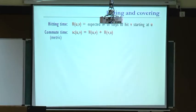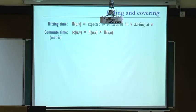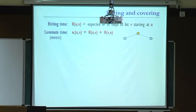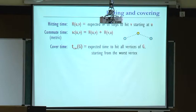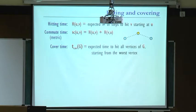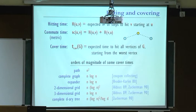H(u,v) is the expected number of steps to hit v starting from u. It turns out to be useful to symmetrize this quantity: K(u,v) is the expected hitting time from u to v plus the expected hitting time from v to u, which is obviously symmetric. The hitting times themselves satisfy a triangle inequality, and once we symmetrize we retain the triangle inequality. So these commute times define a metric, which is useful.